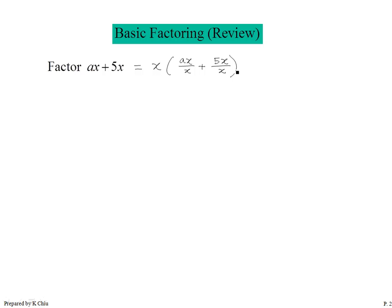This is indeed the reverse of the distributive property. We can double-check that. Let's distribute the x back into the parenthesis. x times the first fraction — the x cancels out, I have 8x back. Plus x times the second fraction — x and x cancel out, so I have 5x back. So now let's simplify that. That would become x times (8 plus 5).